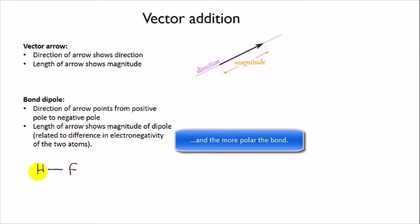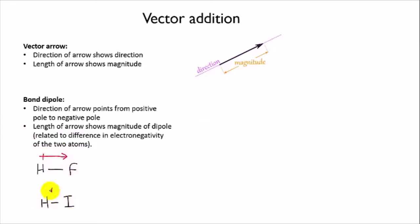If you remember our examples from the last video, we had hydrogen fluoride which had a very large difference in electronegativity between the two atoms, so we draw its dipole as a long arrow. And hydrogen iodide had only a very small difference in electronegativity, so we draw its dipole arrow as a short arrow. In both cases the arrow is pointing towards the more electronegative atom.